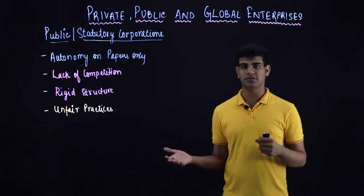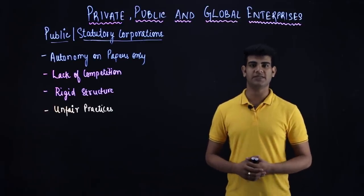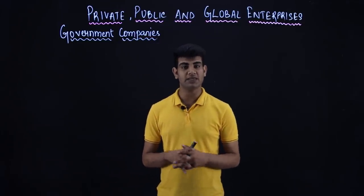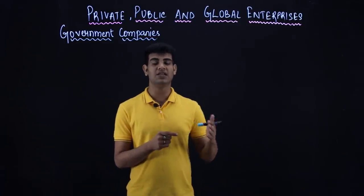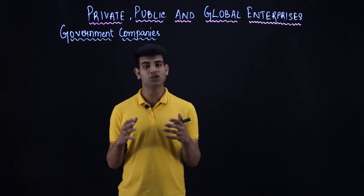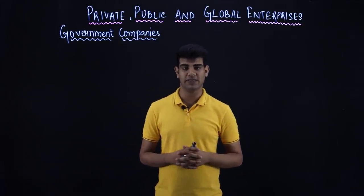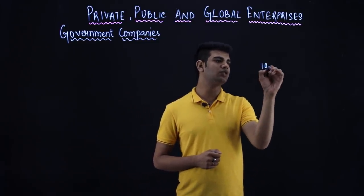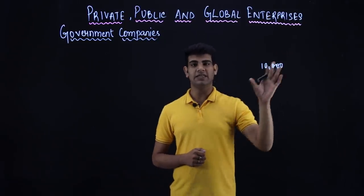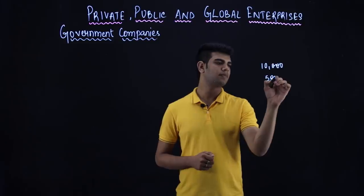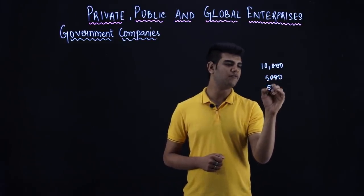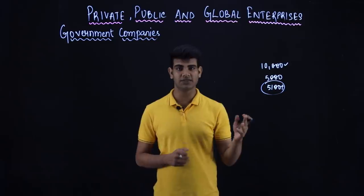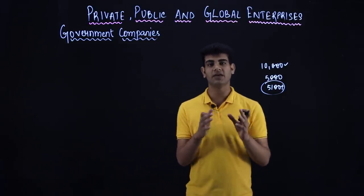Now let's talk about government companies. Government companies are public companies in which 51% or more of the shareholding is held by the government — either state or central government. For example, if a company has 10,000 shares, 51% would be 5,100 shares. If the government holds 5,100 or more shares, it becomes a government company.